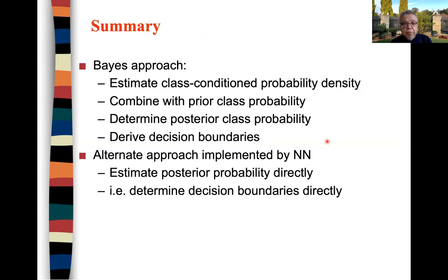In summary, the Bayesian approach estimates the class conditional probability density, combines it with the prior class probability, determines the posterior class probability, and derives the decision boundary. An alternative approach implemented by a neural network is to estimate the posterior probability directly without going through these steps — you determine the decision boundaries directly. This is the Bayesian approach versus the neural network approach when performing classification.